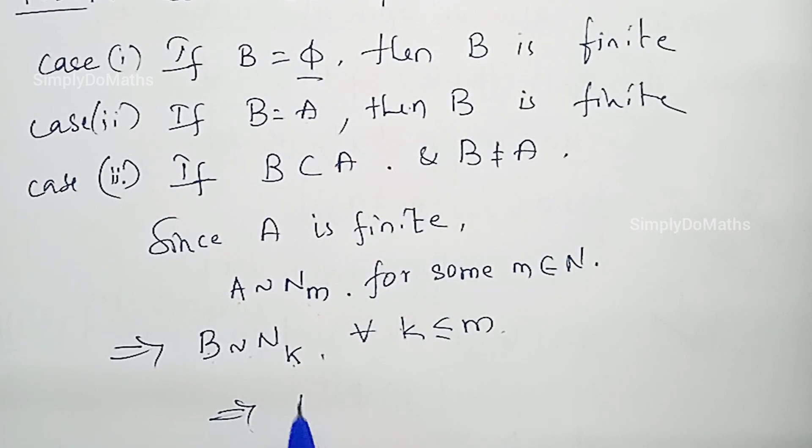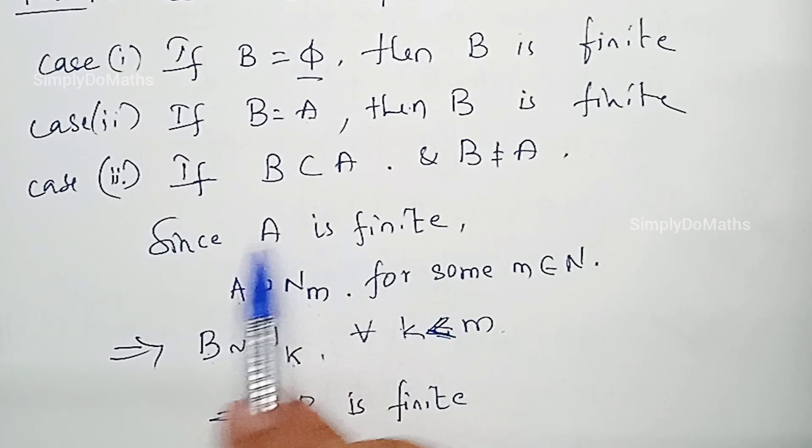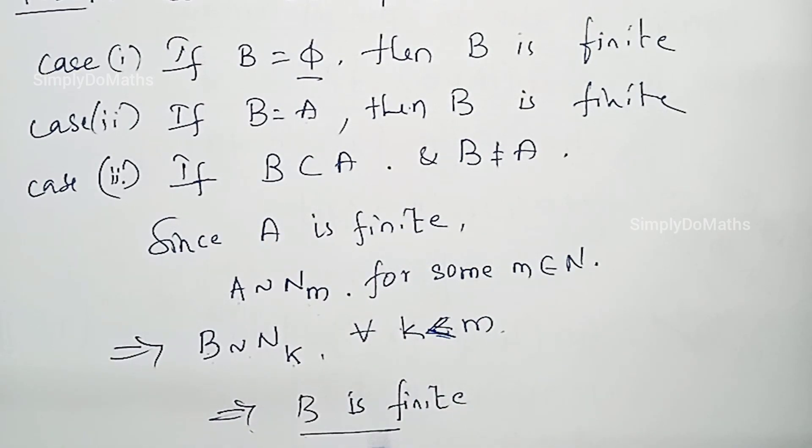Which implies B is finite. We can write strictly less than also, because we have taken B as a proper subset of A. So B is finite.